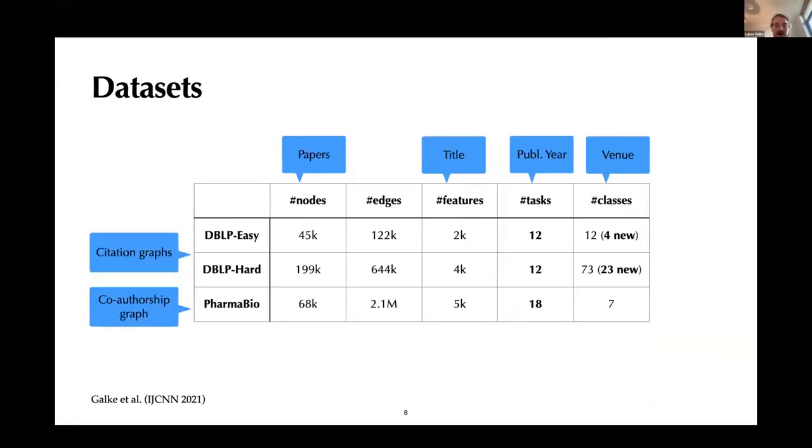And we might extend it step by step. So datasets that we compiled are based on, two are based on DBLP, so computer science publications, and the edges are citations. As a class, we just use the venues in which there were the most papers published, which is, of course, a proxy for the topic. But we also made sure manually that there is not too much overlap. We have one other dataset on pharmacological and biological papers, which is a co-authorship graph, but it doesn't have any new classes.